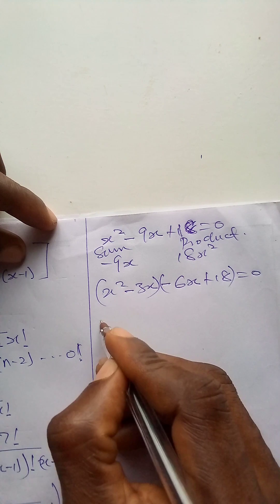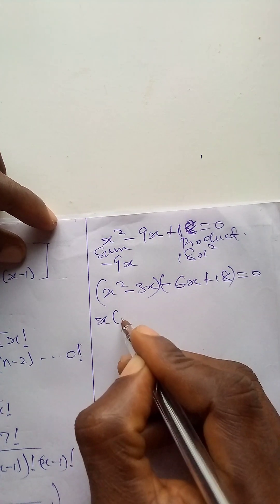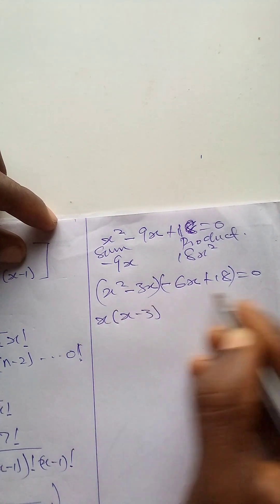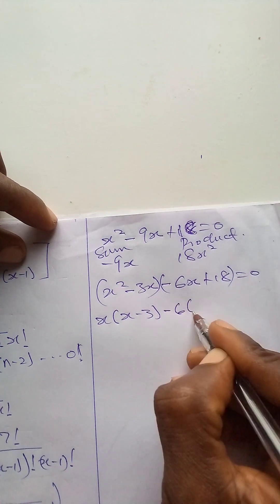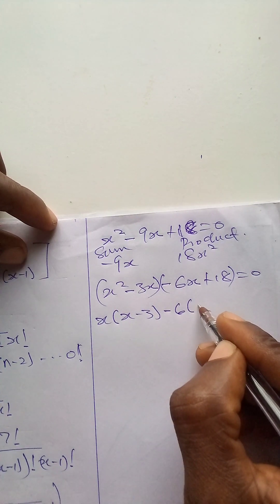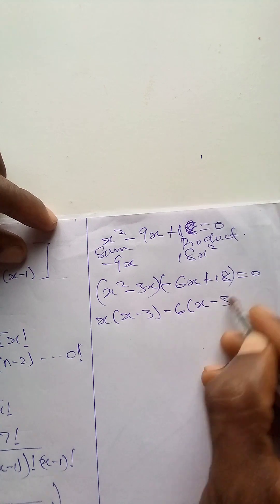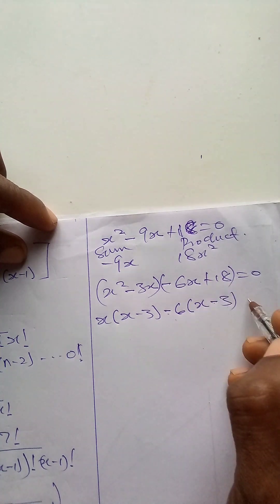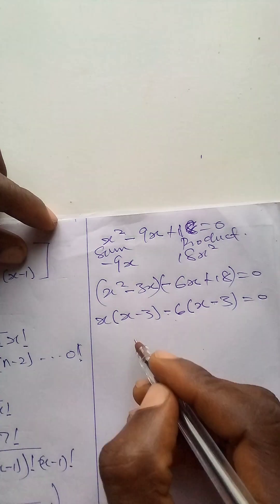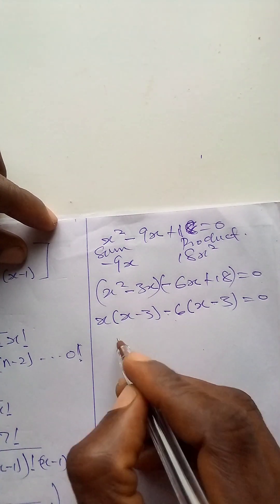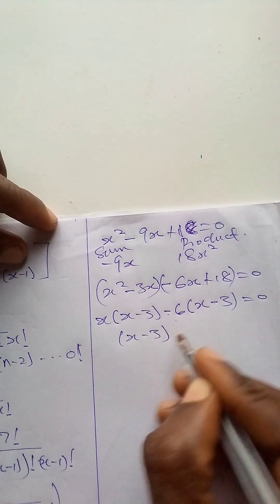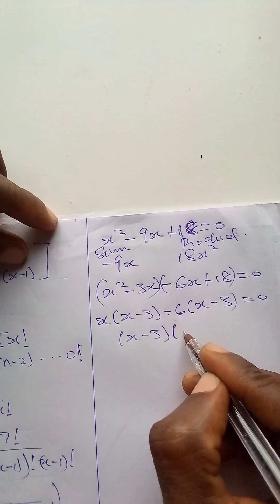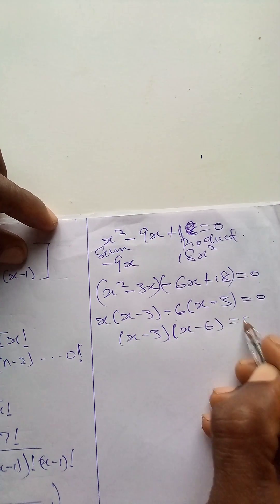We now group. In the first bracket, x is common, giving x times x minus 3. In the second bracket, minus 6 is common, giving minus 6 times x minus 3. These two brackets are the same, so we take one x minus 3 and group the other factors as x minus 6, equal to 0.